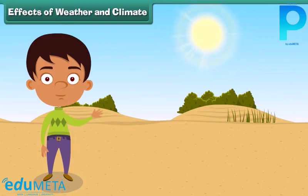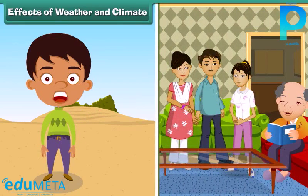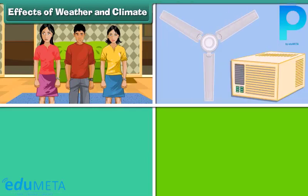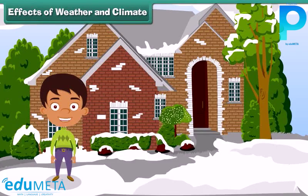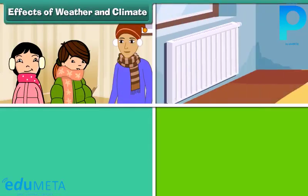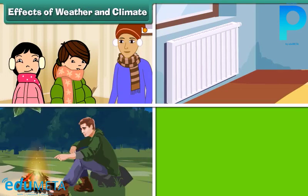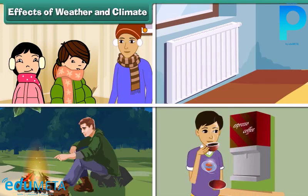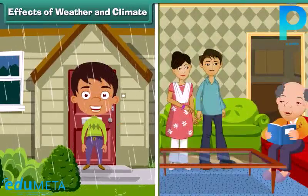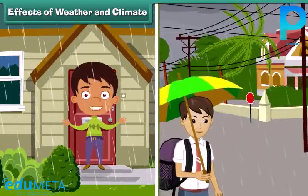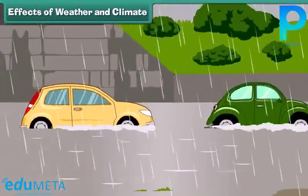Weather and climate affect our lives in many ways. During hot days we try to keep ourselves cool by wearing light clothes, using fans, coolers, and ACs, drinking cold drinks and eating ice creams. In winters we keep ourselves warm by wearing warm clothes, using room heaters, building bonfires, and drinking hot drinks like tea and coffee. During rainy days we avoid rain by staying indoors, using umbrellas and raincoats. Excessive rainfall causes floods.